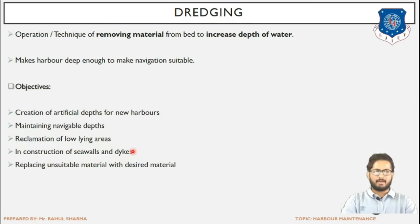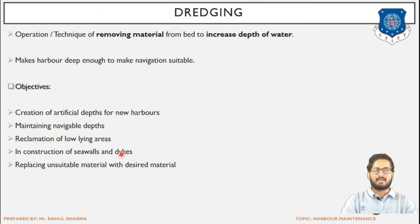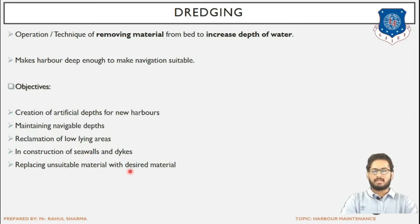Dikes are embankments constructed parallel to the shore. Their purpose is to ensure that the effect of water does not spread to the adjacent land area. Basically, dikes are constructed parallel to both sides of a water body for flood control — when the water level rises, the embankment prevents water from spilling onto adjacent land or villages. Replacing unsuitable material with desired material is another objective, where dredged material is used instead of unsuitable existing material.